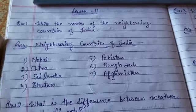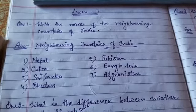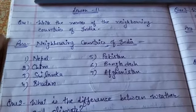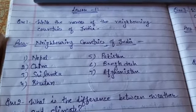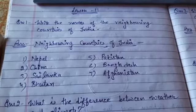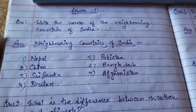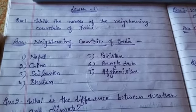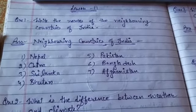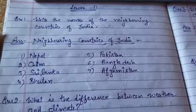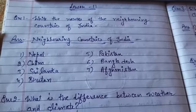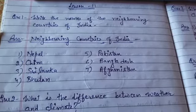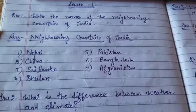The names of neighboring countries are: Nepal, China, Sri Lanka, Bhutan, Pakistan, Bangladesh, Afghanistan, and Myanmar, which is also a neighboring country of India.